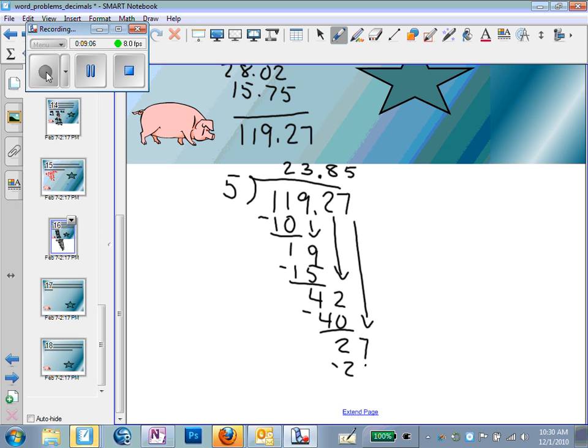5 goes into 27 five times. That's 25, with a remainder of 2. I'm going to add a 0 to the end here. I need to round to the hundredth because of the money. So I'm going to go ahead and divide it out to my thousandth. That makes it 4 here. And I can round. So my answer is going to be $23.85, rounded to the nearest cent or hundredth.